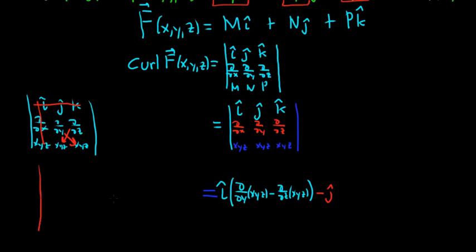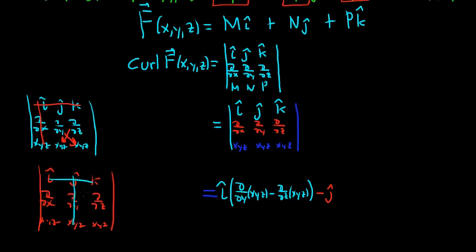Now we cross out the middle row and middle column. Crossing out the corresponding row and column, we get: ∂/∂x of (xyz) times ∂/∂x of (xyz) minus ∂/∂z of (xyz). So it's ∂/∂x of (xyz) minus ∂/∂z of (xyz) — all multiplied by negative j-hat.